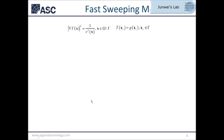Therefore, we propose to use the fast sweeping method. It's a grid-based finite difference method to solve the Eikonal equation directly. The general expression for the Eikonal equation has t as travel time, x as space location, c as propagation speed, omega as the modeling region, and gamma as the boundary condition. For a point source, the boundary condition is simply the point and its travel time; at that point the boundary values are known.